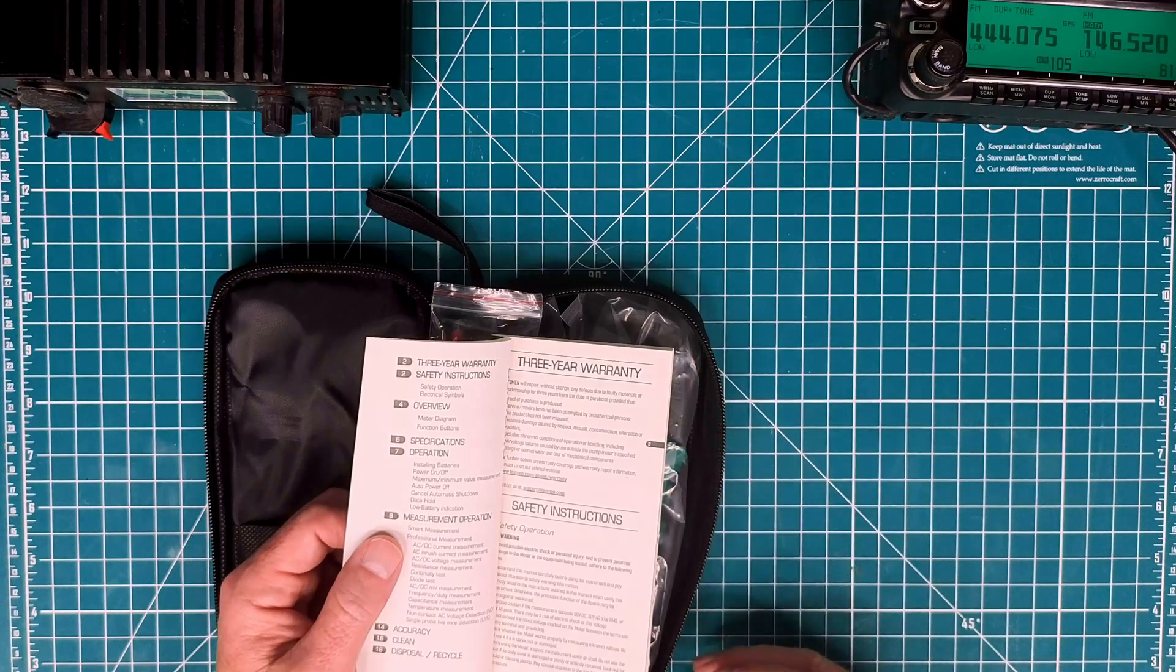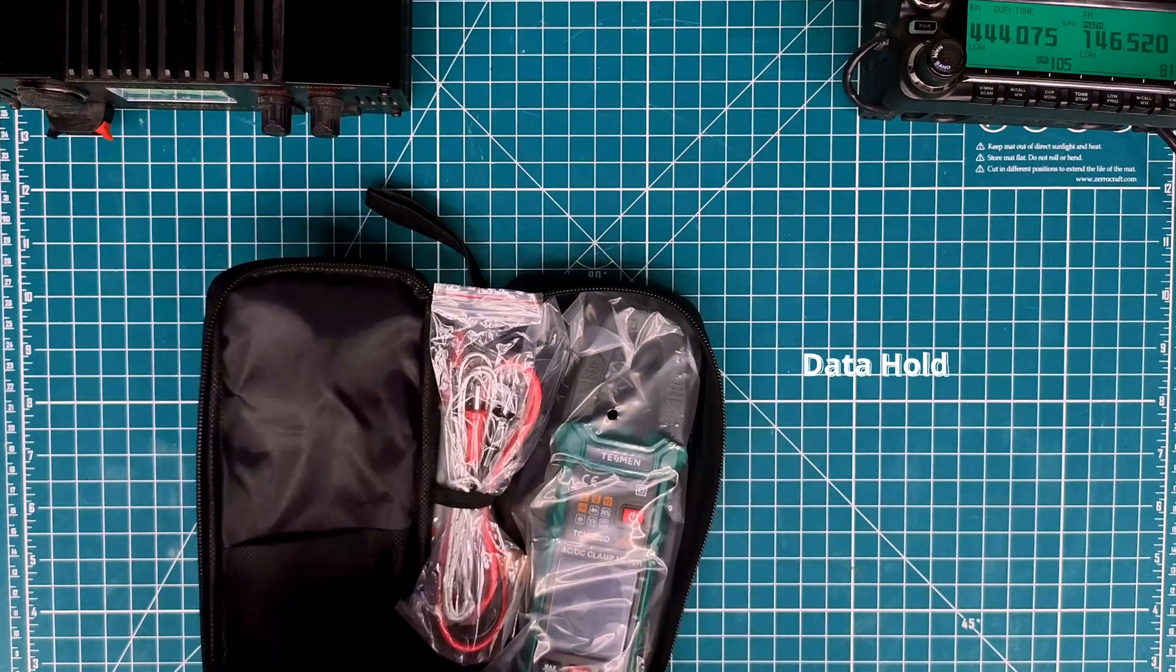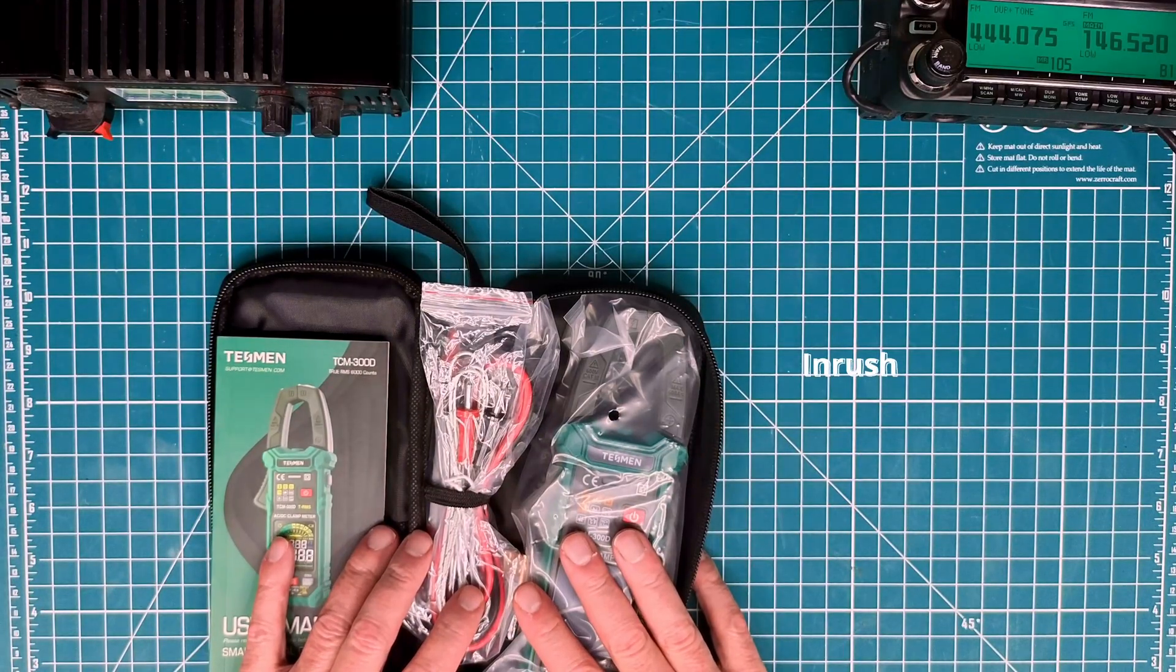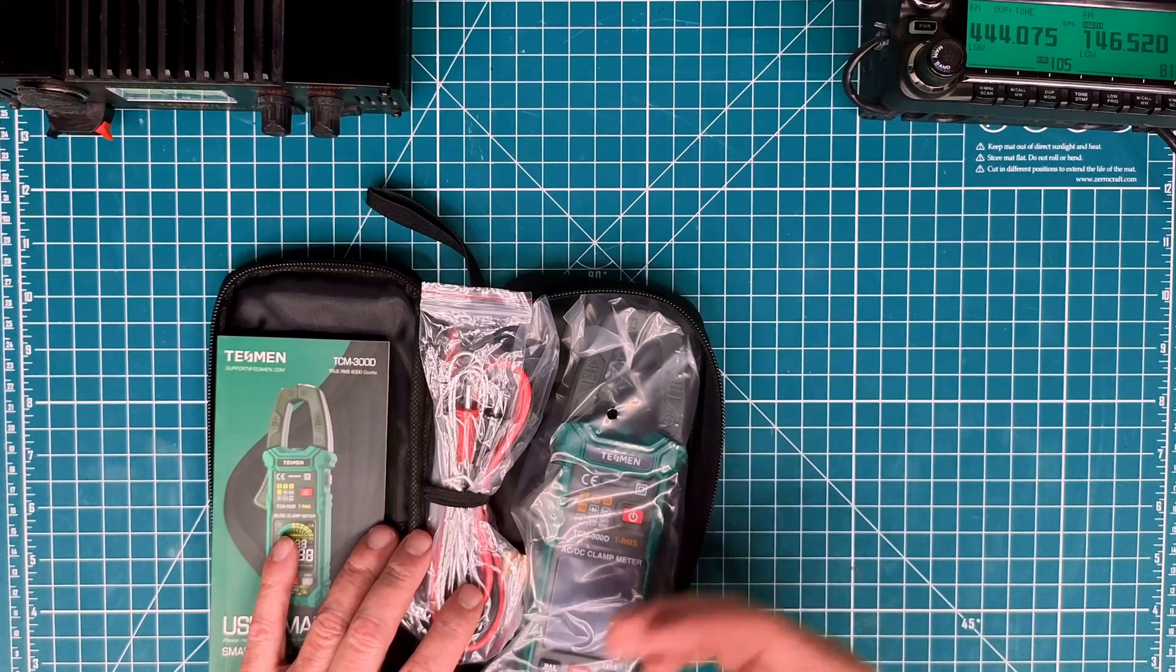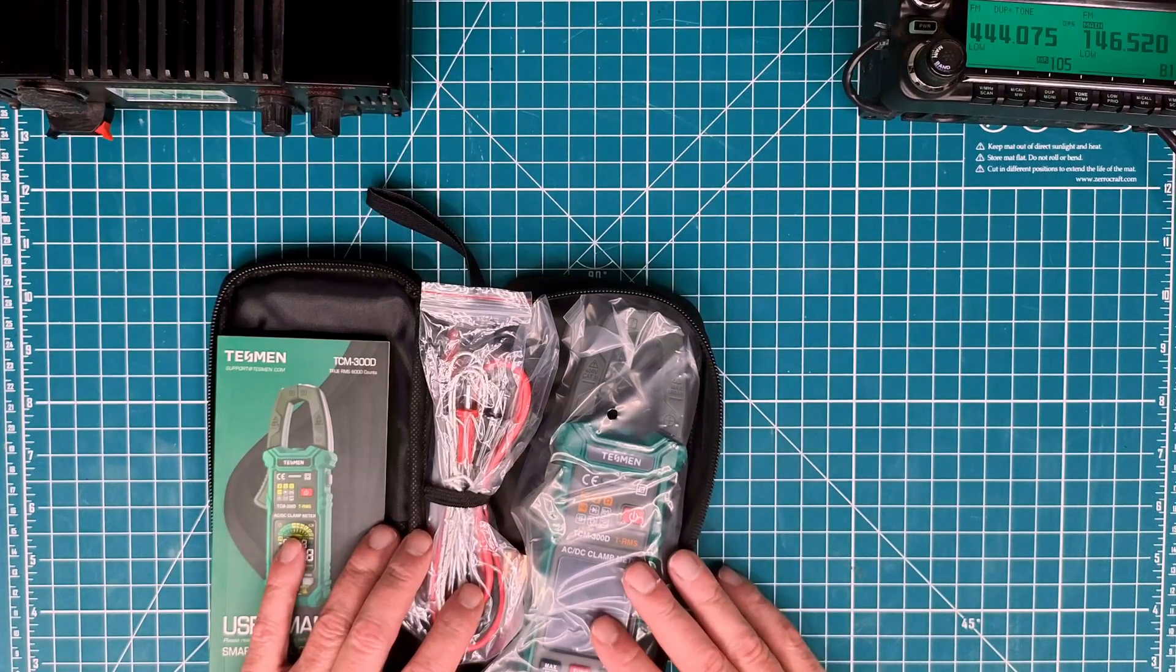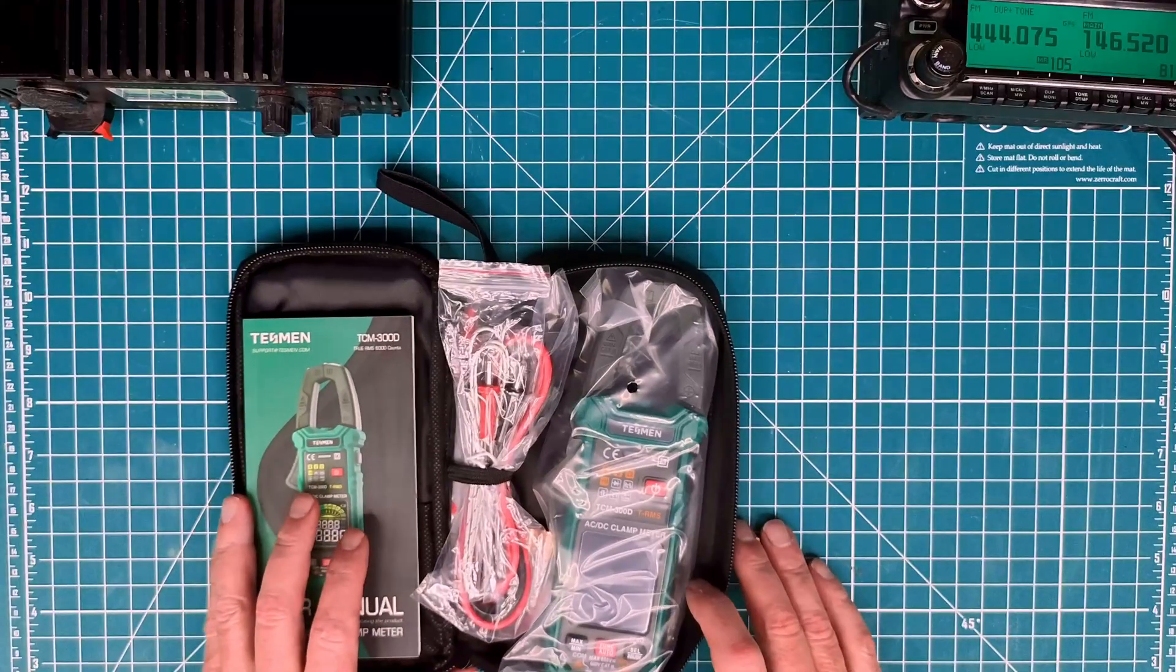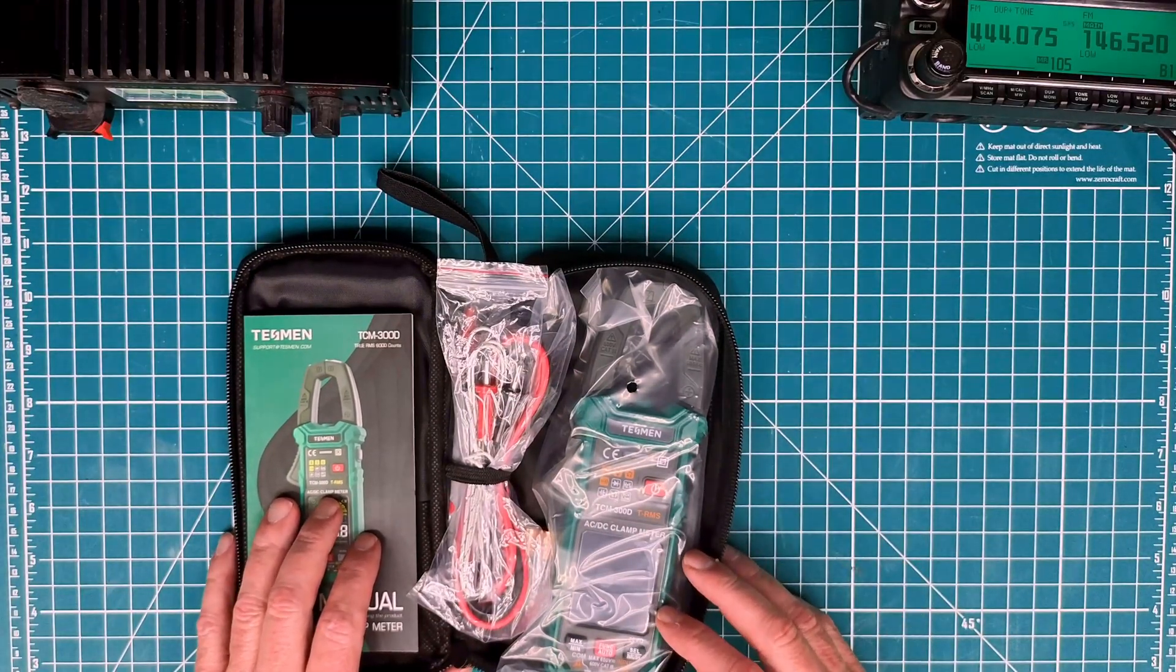So it's got the live wire detection. It's got a data hold, and that is important in a situation, which is the next feature of this, and that's inrush and being able to test the inrush current. Now, that's not something that you find on the cheaper meters in general. And where does that really come into play?